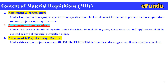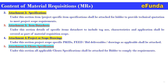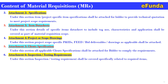Attachment 4 is project or scope drawing. Under this section, project scope-specific P&IDs, FEED, or bid deliverable drawings as applicable shall be attached as part of the material requisition. Attachment 5 is client specification. Under this section, all applicable client specifications, in addition to the project specification, shall be attached for the reader to comply with the client's requirements.